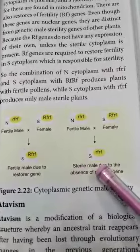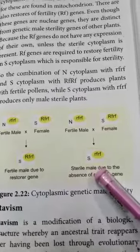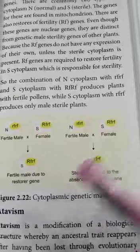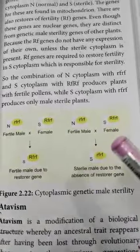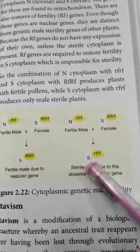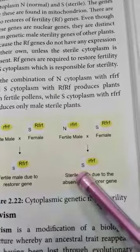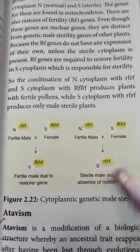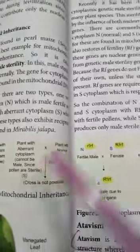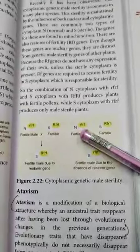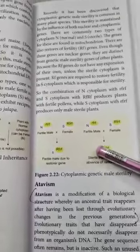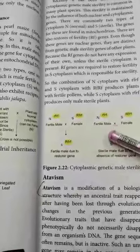So sterility is responsible for both nuclear and cytoplasmic genes. Nuclear genes and cytoplasmic genes present in the mitochondrial inheritance together make this the best example of cytoplasmic genetic male sterility, as seen in Sorghum vulgare.